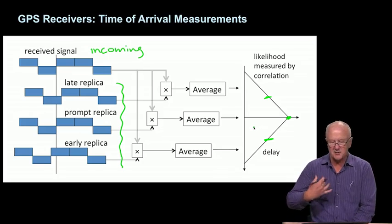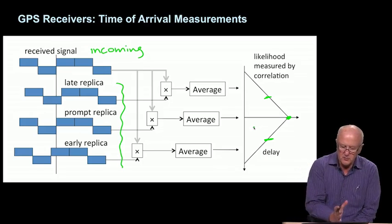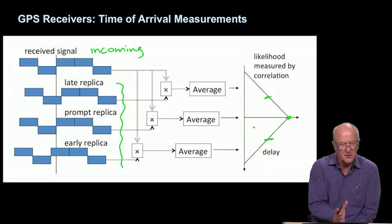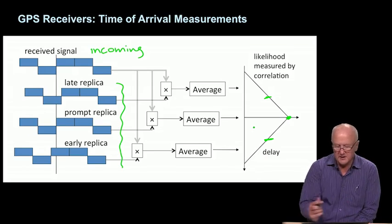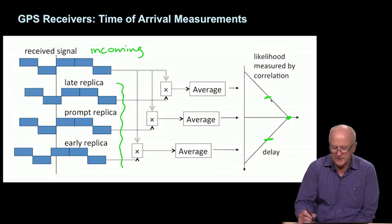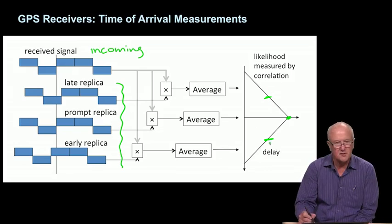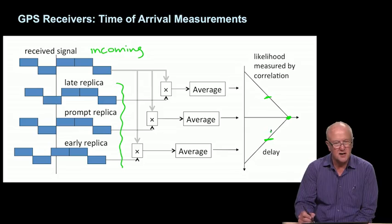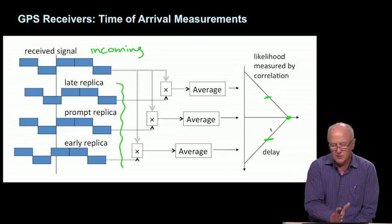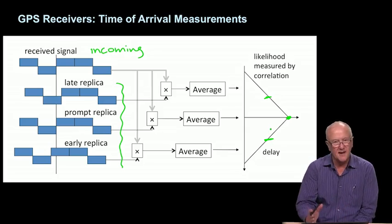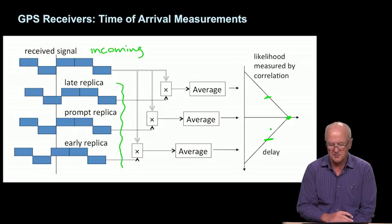The action of the receiver is to move this family—late, prompt, early—back and forth so that the late correlation is equal to the early correlation. We difference those two and try to move the replica family such that the difference is always zero.